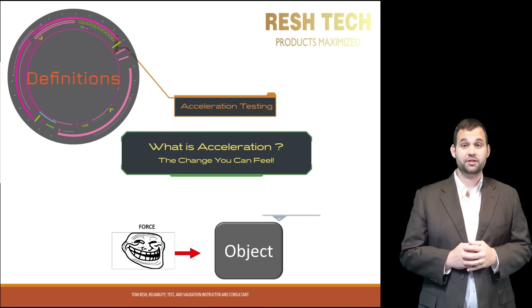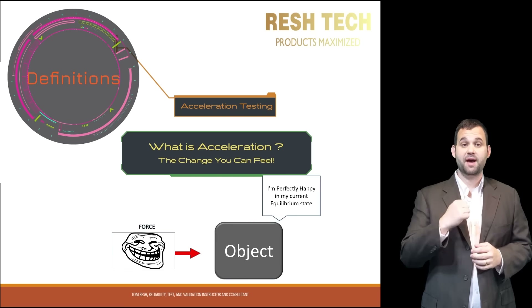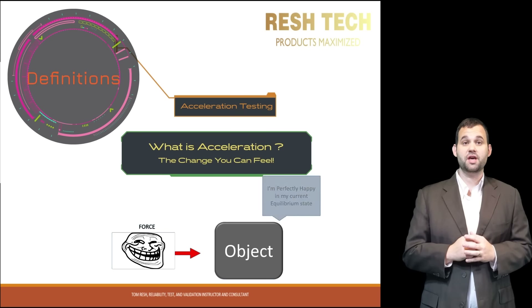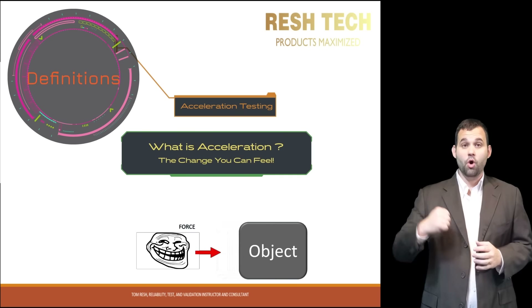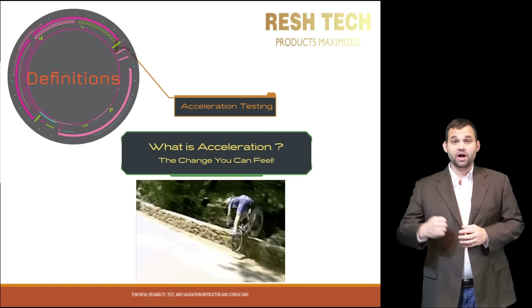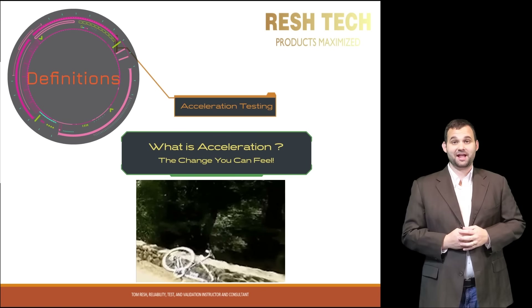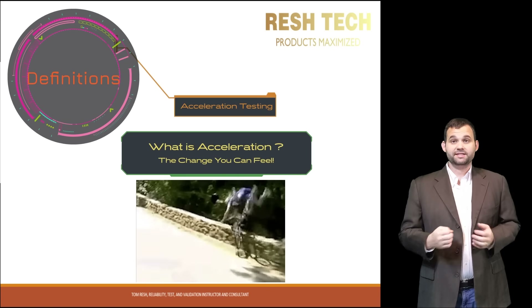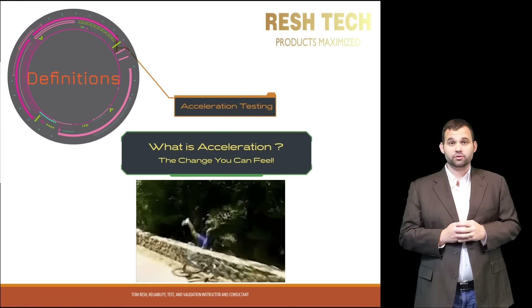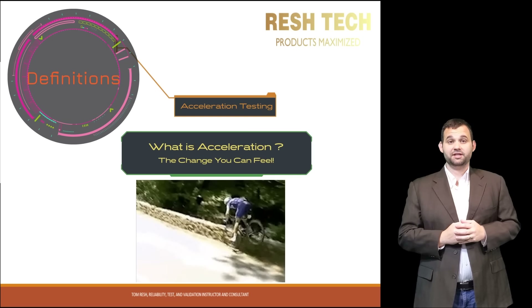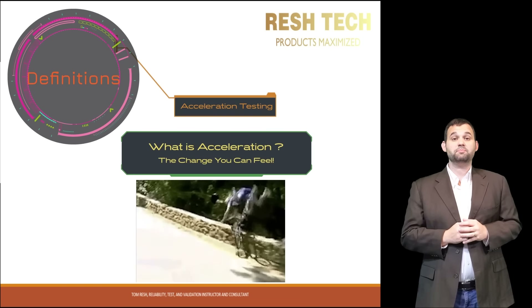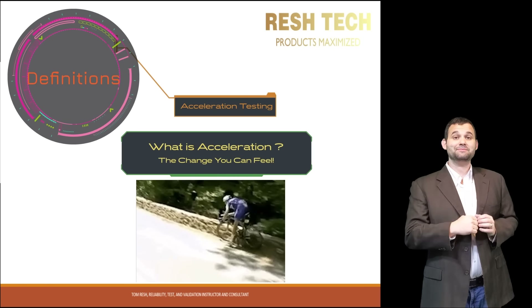When a force causes you or an object to move, initially your body mass or the object's mass is perfectly happy in its current equilibrium state and does not want to change, whether it's from a rest state or a constant motion state. Have you ever crashed head-on into an object on a bicycle and flew over the handlebars? What is happening is your body is perfectly happy at the current motion state while cruising along. When you crash into an object, your bike immediately stops but your body keeps moving until gravity puts you back on the ground.